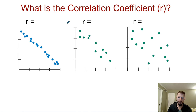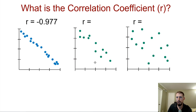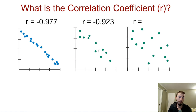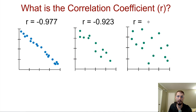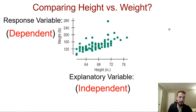Let's estimate correlation coefficients. This one is negative and very strong — so about negative 0.95. The actual value is negative 0.977. This next one looks still fairly strong negative — maybe negative 0.8. It's actually negative 0.923. And this one is negative but very weak — maybe negative 0.4. It's actually negative 0.48. You can see how I do at estimating these — it's just kind of fun.